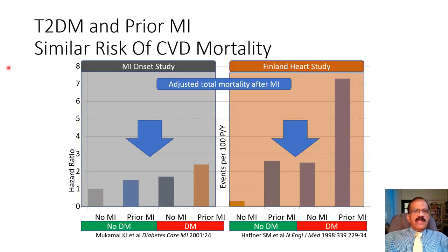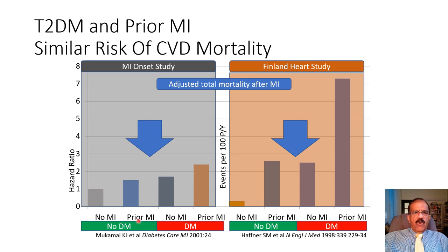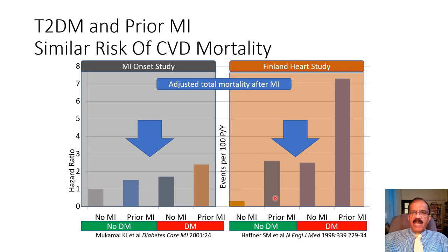Two similar studies showed that patients who were not diabetic but had a prior myocardial infarction had a similar risk of cardiovascular mortality compared to patients who were diabetic but had no prior MI. In the Finland Heart Study, those who were non-diabetic with prior MI versus those who were diabetic without prior MI had almost similar mortality risk.